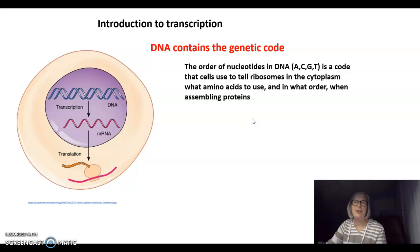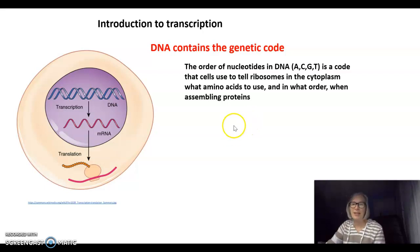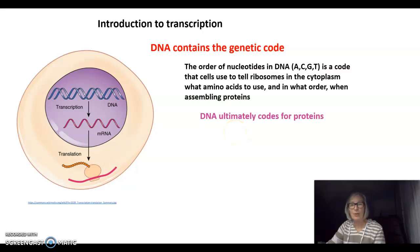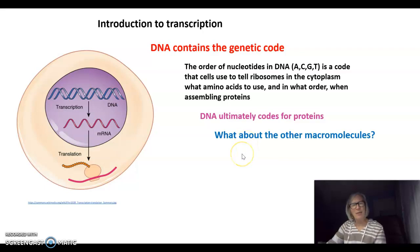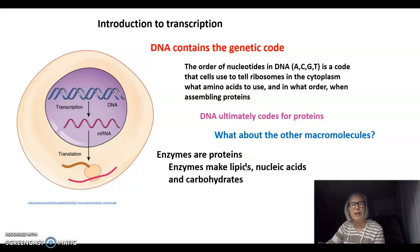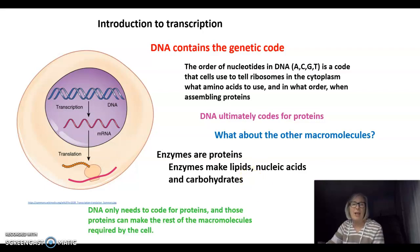DNA contains the genetic code. The order of nucleotides in DNA — A, C, G, and T — is a code that tells cells to tell their ribosomes in the cytoplasm what amino acids to use and in what order when assembling proteins. This means that DNA ultimately codes for proteins. But what about the other macromolecules? Enzymes are proteins, and enzymes can make lipids, nucleic acids, and carbohydrates. So DNA only needs to code for proteins, and those proteins can make the rest of the macromolecules required by the cell.